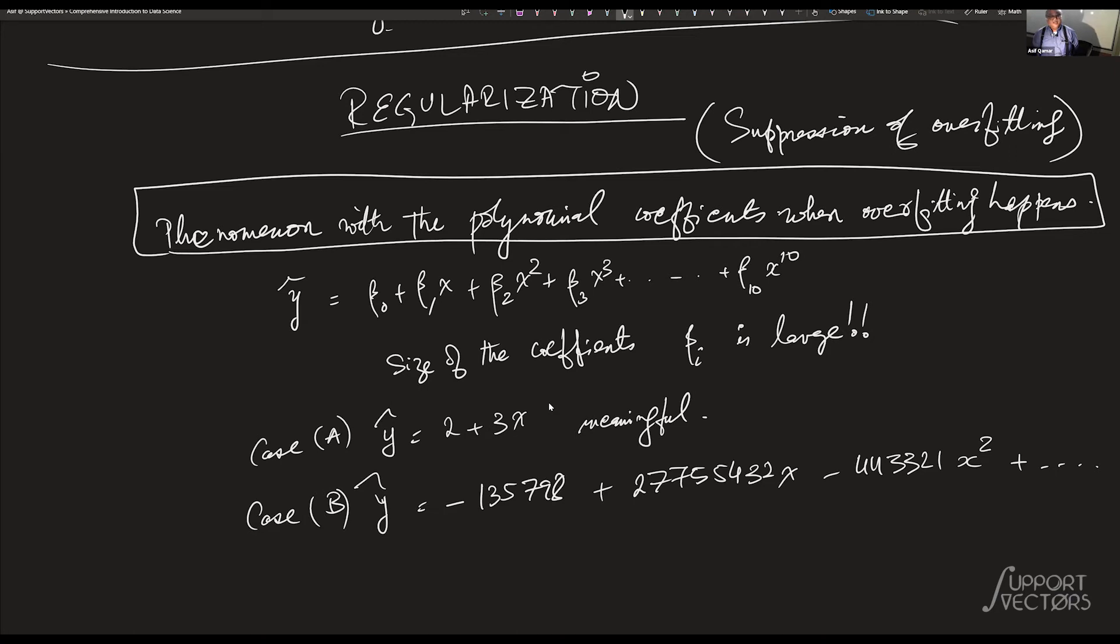So now what do you notice when you look at these coefficients? They are rather big. It doesn't make sense. Each coefficient is saying, hey, my feature is more important, effectively. And you can imagine that this leads to wild oscillations. So now look at it, and I want you to pay attention to what I'm going to say. Look at it from a geometric perspective. What does it mean?